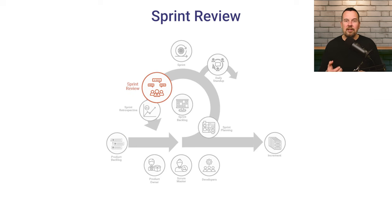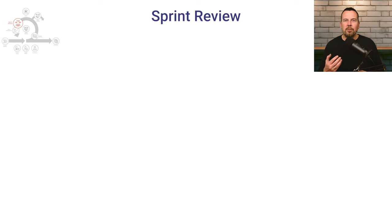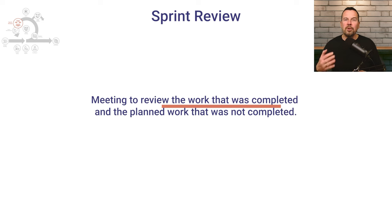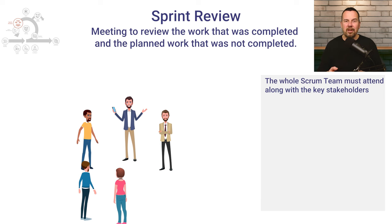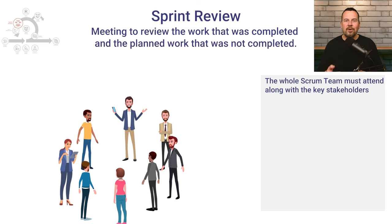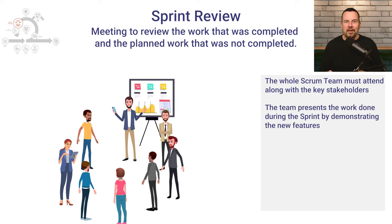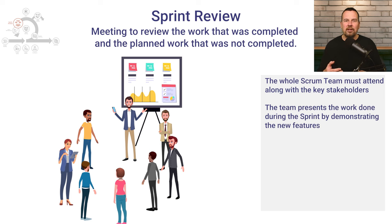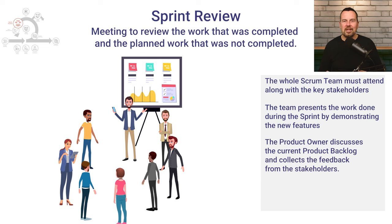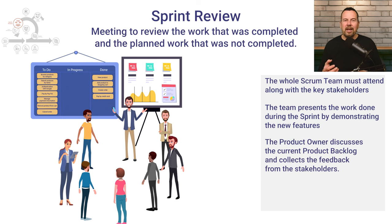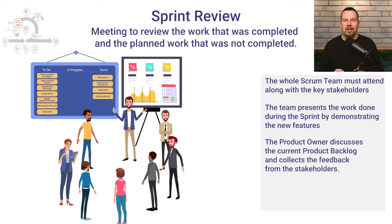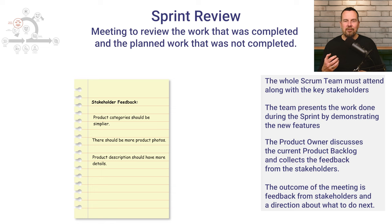The third Sprint event is the Sprint Review, which happens at the end of each Sprint. Its purpose is to review the work that was completed and the planned work that was not completed. The whole Scrum team must attend along with key stakeholders invited by the Product Owner. The team demonstrates the work done during the Sprint, and the Product Owner discusses the product backlog in its current state and collects feedback from the stakeholders based on the demo. The outcome is feedback from stakeholders and direction about what to do next.